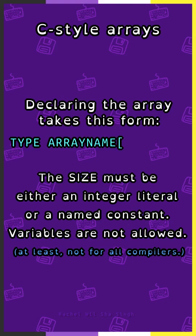Declaring an array takes this form. You need a type, your array name, and then the size within square brackets. The size must be either an integer literal or a named constant. Variables are not allowed, at least not for all compilers.